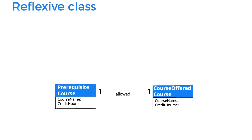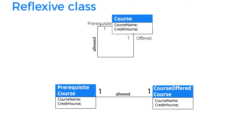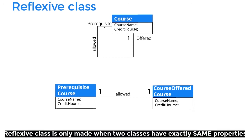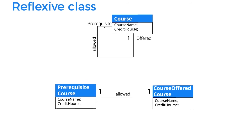Both classes contain the same properties — course name and credits. This can be shown as a reflexive class: make only one class, name it as you like (we are naming it 'Course' for convenience), putting both combined properties of course name and credits together. Then prerequisite and offered — the two main parts — are written on the right and left side, with the association 'allowed' between them. These two figures mean exactly the same thing.